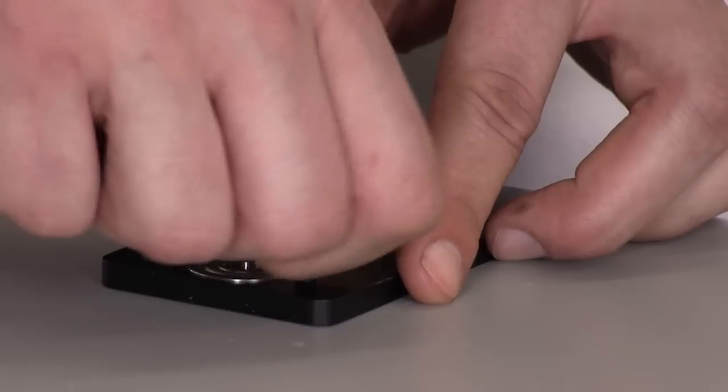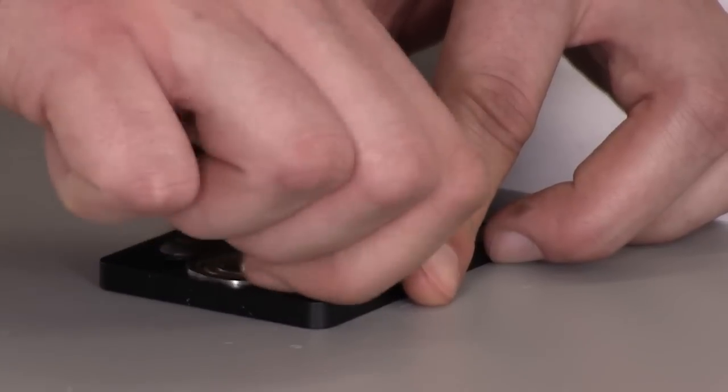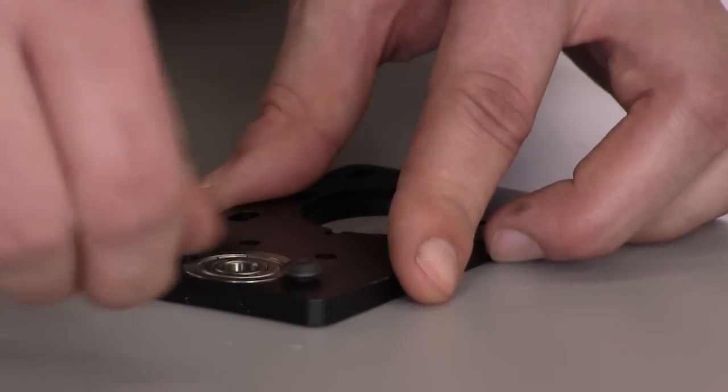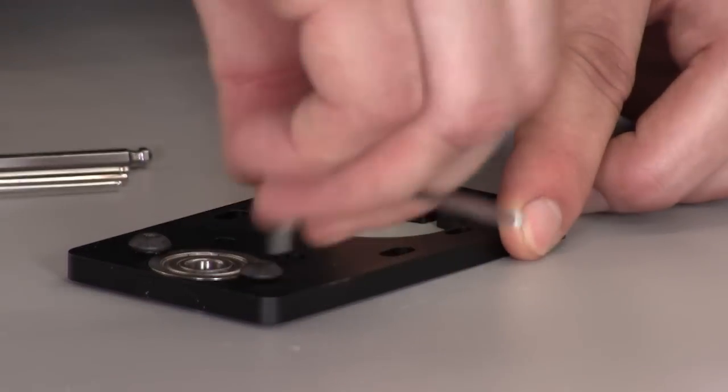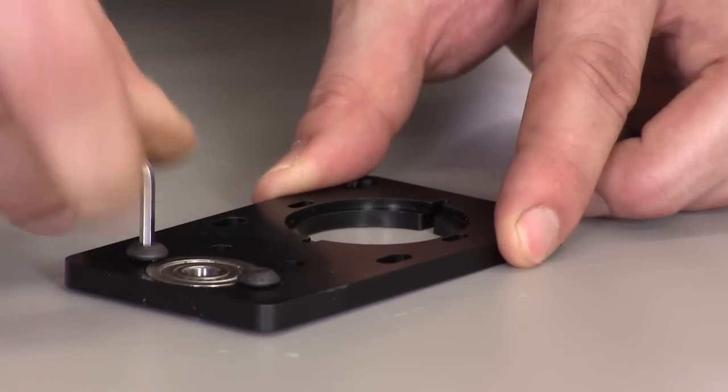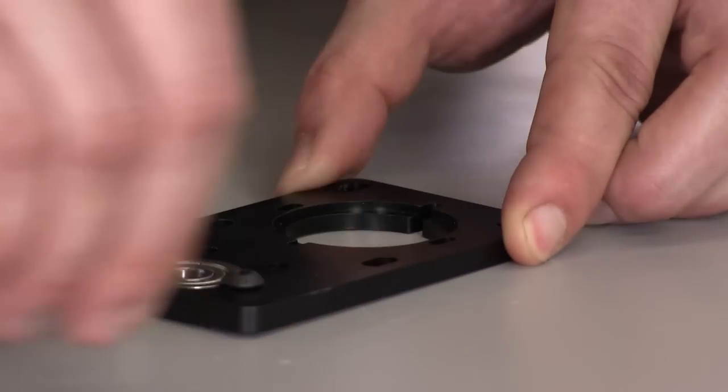Now we'll use two small screws to secure this flanged bearing to the plate. You'll want to thread these screws from the side with the flange. Get them finger tight first and flush with the bearing, and then tighten them down.